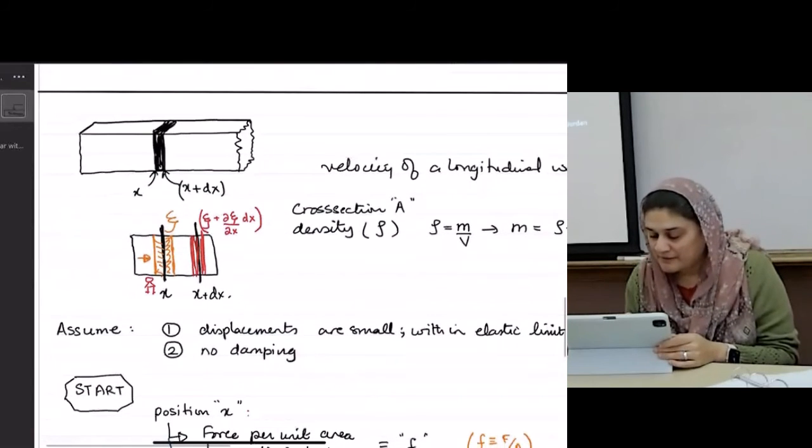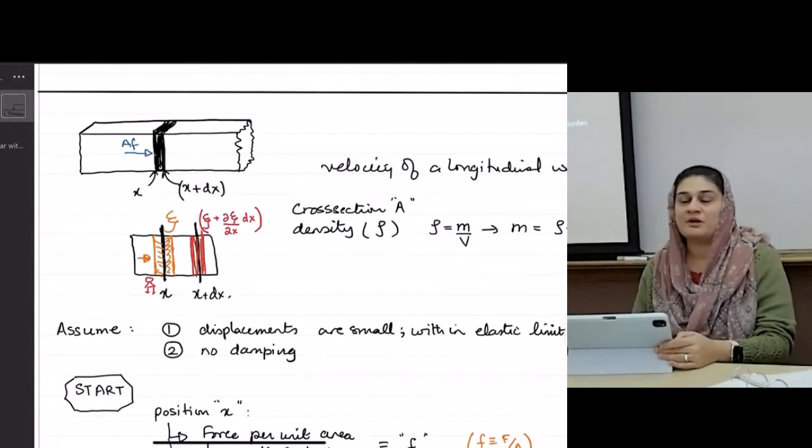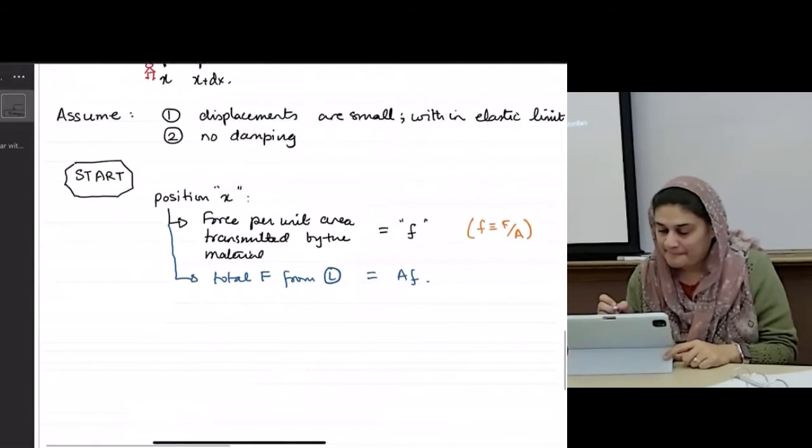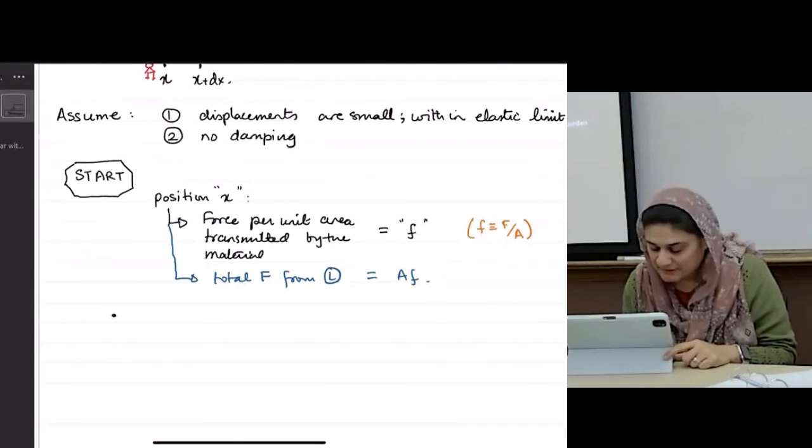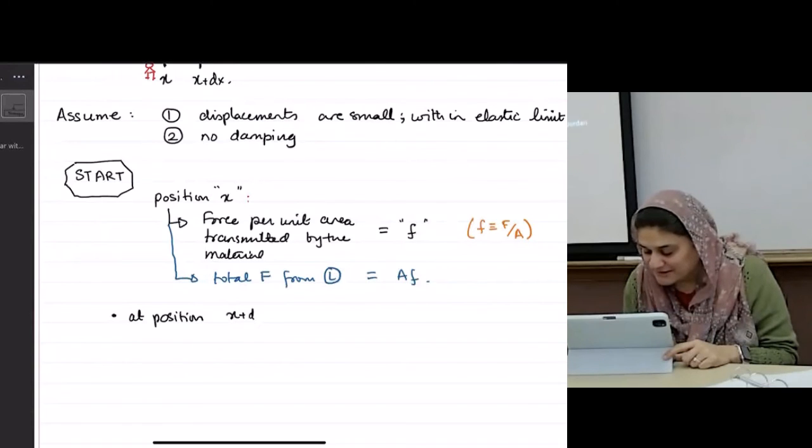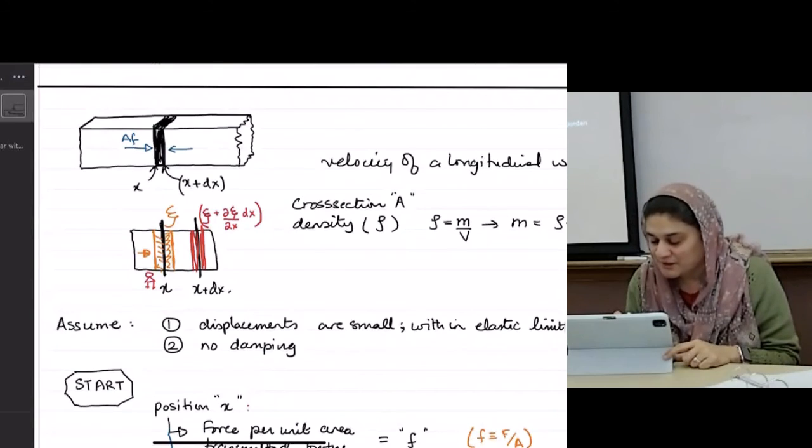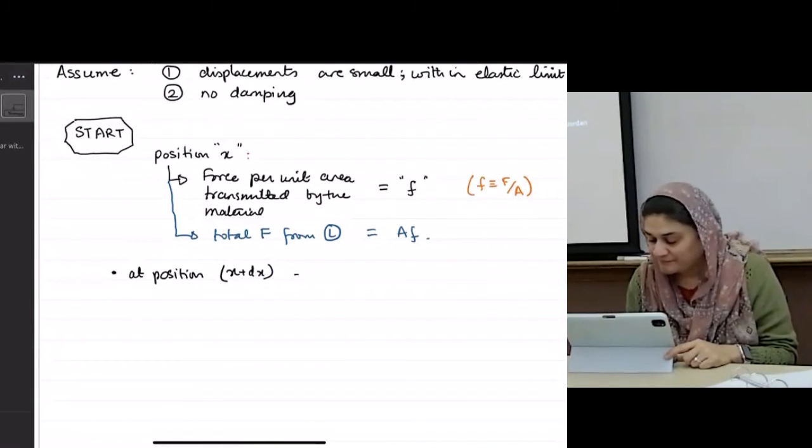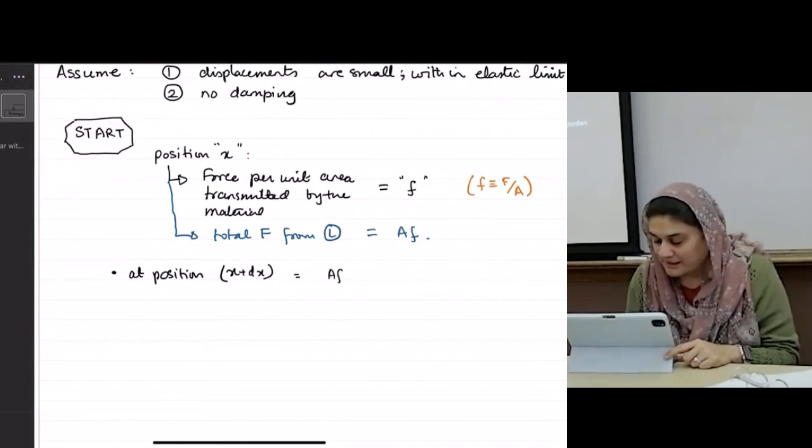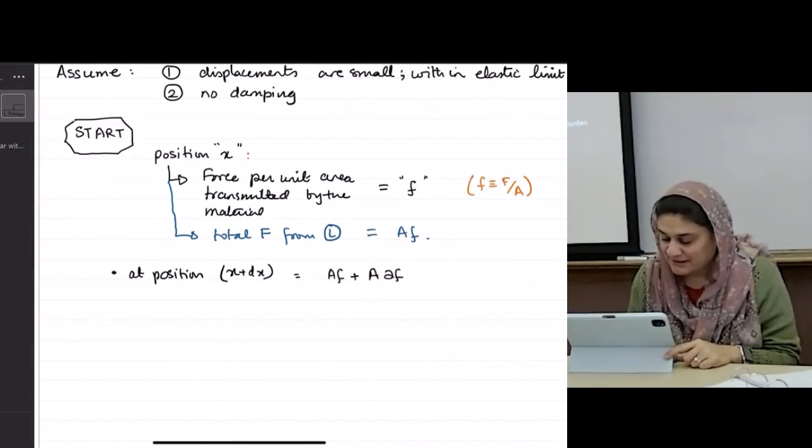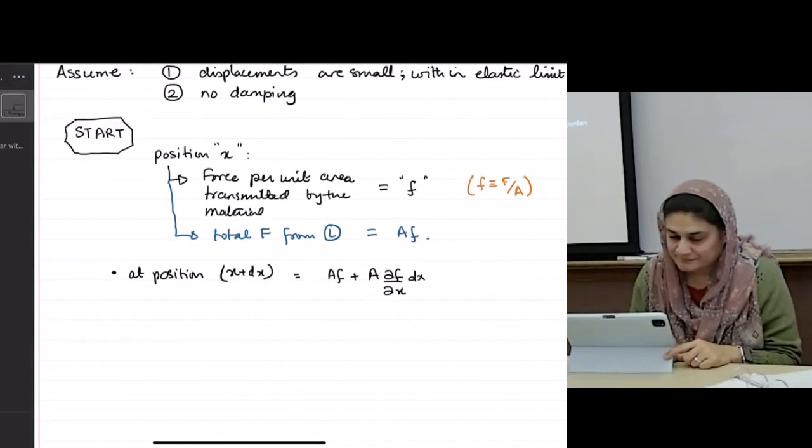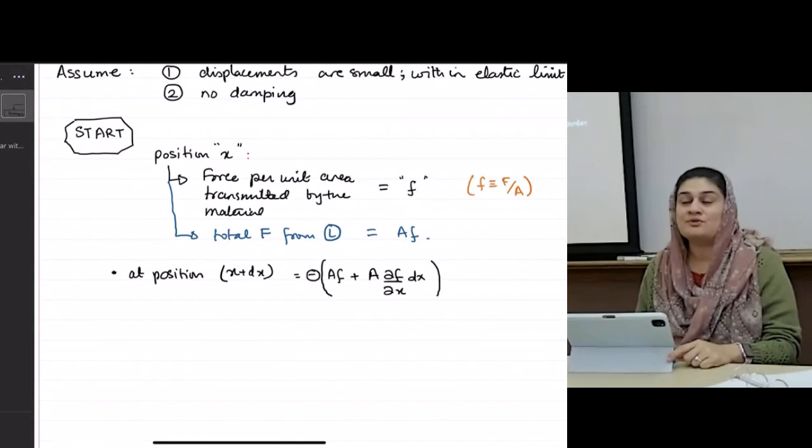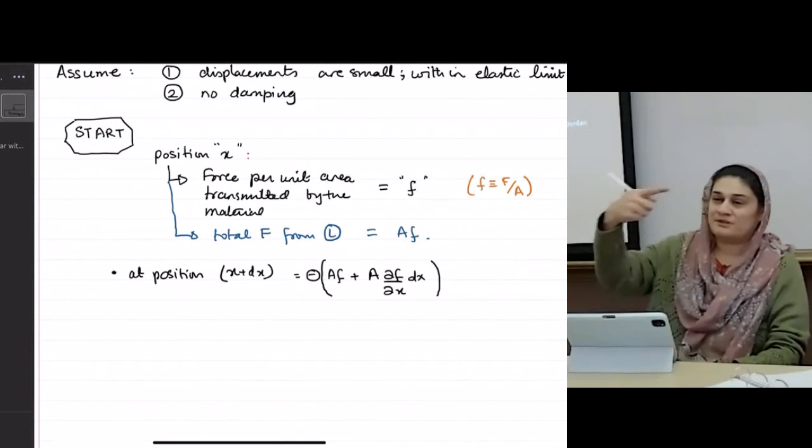So if I go back here, this is my A f, the force from the left. What will be the force from the right? Well, my force from the right, I'm going to be at position x plus delta x. So now I'm at this position right here. May I write following the same logic, A f plus A ∂f/∂x dx. But I'm going to add a minus sign here. Why am I adding a minus sign? Because I chose my coordinates positive that way. Right. It's the force that's being applied the other way.